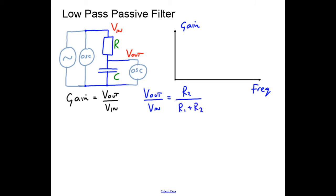Now we need to make some modifications, because the capacitor doesn't have resistance — the capacitor has something called reactance, and the reactance is 1 over 2πfC. Although the capacitor is a reactive element, we can think of it as having a type of resistance, but we must call it reactance. So to modify the potential divider equation, instead of writing R2 I'm going to write Xc, and instead of R1 I'm simply going to write R.